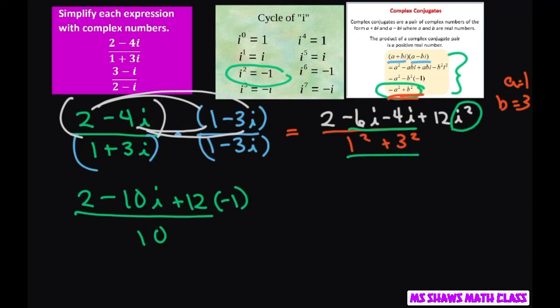Okay, going further, we're going to have 2 minus 10i minus 12 divided by 10. This is going to give me negative, let's see, negative 10 minus 10i.